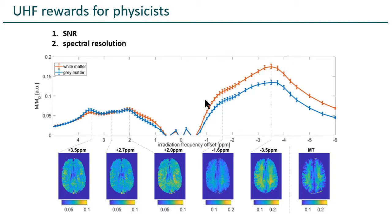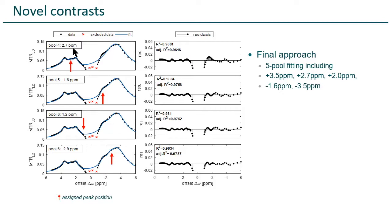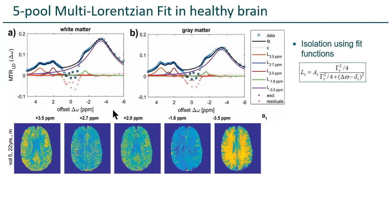In CEST imaging, every point in this spectrum is an image. So we can actually create a lot of contrasts, and rather than taking just a point, we try to model it. We put some multi-pool models there — we added a pool at 2.7 ppm where there seems to be a peak, and there's also substructure in the NOE that you can try to model. If you do that, you can get these multi-Lorentzian fit maps. Then you see many different contrasts. The 3.5 ppm is this amide proton transfer, which was already cited a lot, but now it's selective — really selected at this frequency.